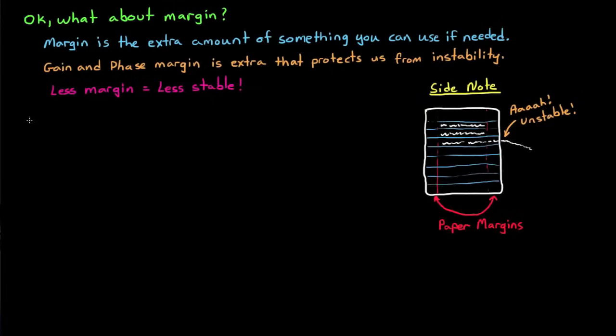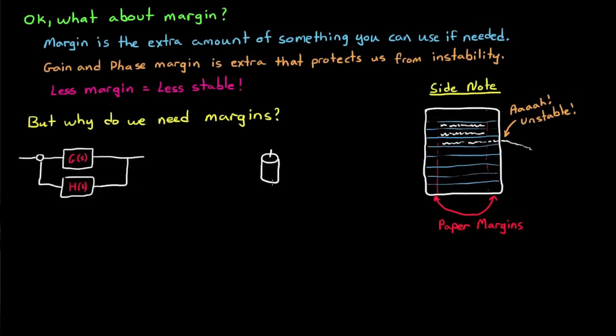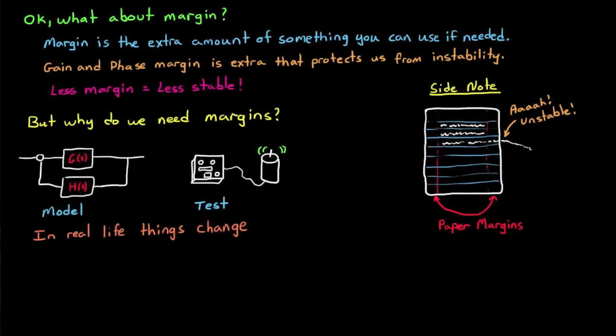So now you might wonder why we design a system with margin built in in the first place. Well usually when you're designing a control system, you're doing so based on a model of the system with mathematical equations, or you're testing a control system on physical hardware under known conditions and then making some assumptions about the way that your physical system will behave beyond the test environment. And the problem is that things don't always behave the way you expect. For example, if you're building a brushless DC motor controller, gain and phase errors can come from multiple places.